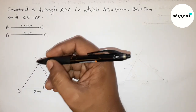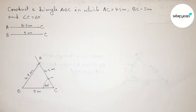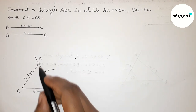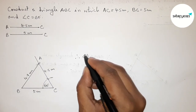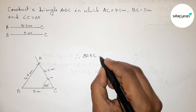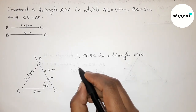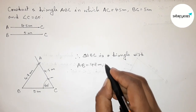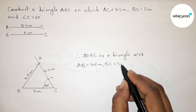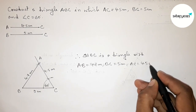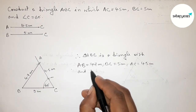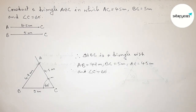So AB equals 4.7 centimeters approximately. Therefore, triangle ABC has sides AB equals 4.7 centimeters, BC equals 5 centimeters, AC equals 4.5 centimeters, and angle C equals 60 degrees. That's all — thanks for watching. If this video is helpful, please share it with your friends.